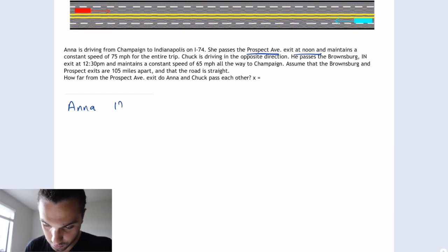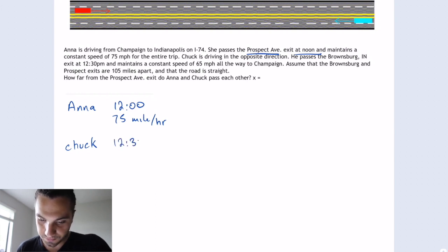So Anna starts at 12, midday, maintains a constant speed of 75 miles per hour. So Chuck is driving the opposite way and he starts at 12:30, maintains a constant speed of 65 miles per hour all the way. So assume that Brownsburg and Prospect exit are 105 miles in between.